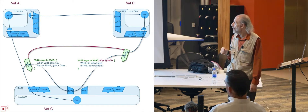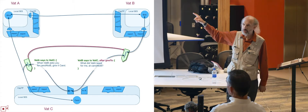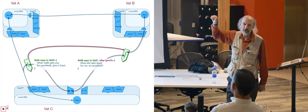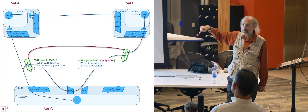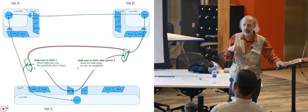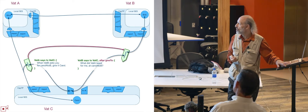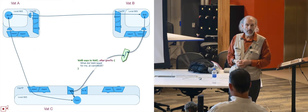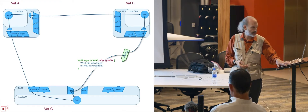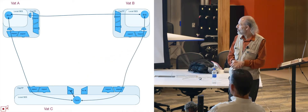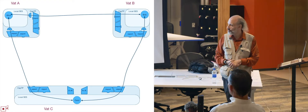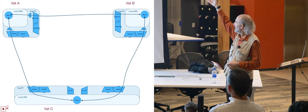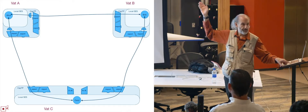This red line is a happened-before constraint — something propagated through the protocol — where the take-from message records that the give-to message must be delivered to VATC before it sees the take-from message. We now know that the give-to will arrive first. There are redundant paths by which it might arrive, but when it arrives VATC acts on the give-to by placing a pointer to carol in that table at the index that VATB expects. When the take-from arrives, the reference is taken and placed in the export table at an index matching the import table where the promise was already registered.